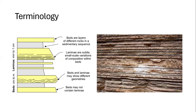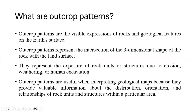Another important terminology is laminations. Within the beds we can have small-scale variations of composition — we call those the lamellae, and they usually range from millimeters to one centimeter. So we've got the beds with the bedding planes, and if these beds have similar mineralogy, paleontology, and other features, they can be grouped into units, and those units can also form what we call formations and members.